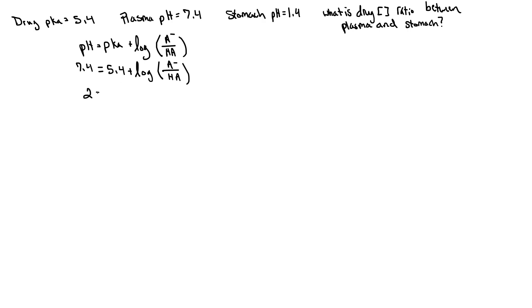So if we solve this out we get 2 equals log of the base over the acid. And that means that 10 to the second equals A- over HA or 100 equals A- over HA. If we solve this out we get 100 times HA equals A-. What this tells us is that we have 100 times more ionized or in this case A- in our plasma than we do unionized.